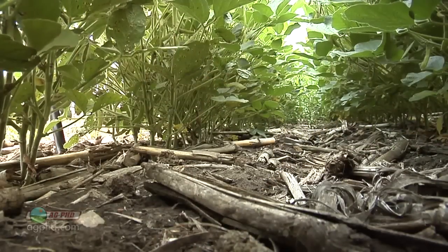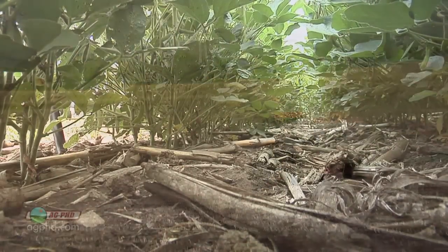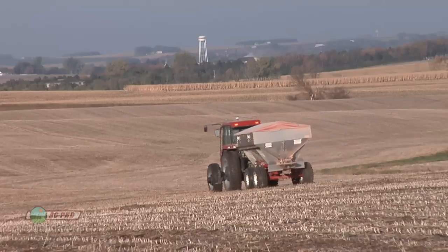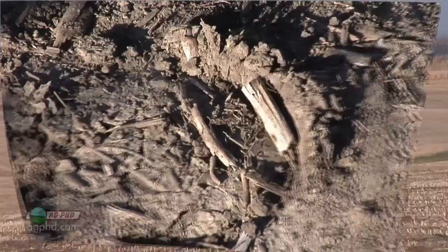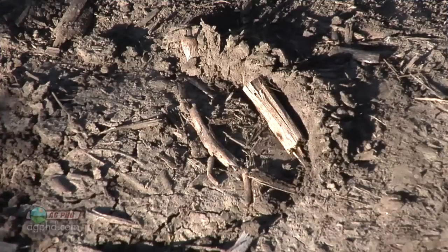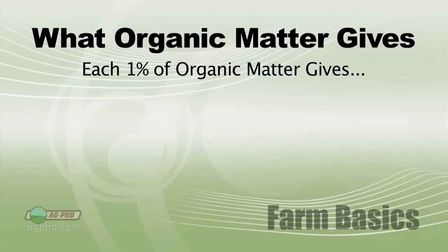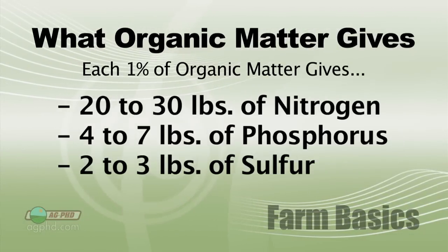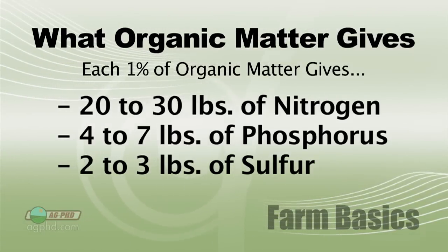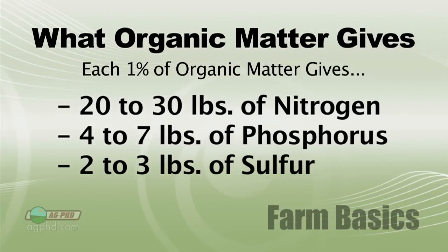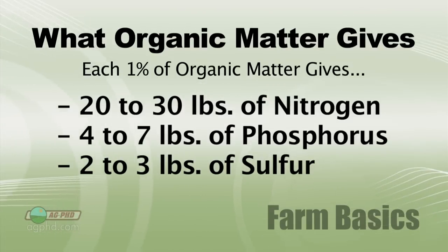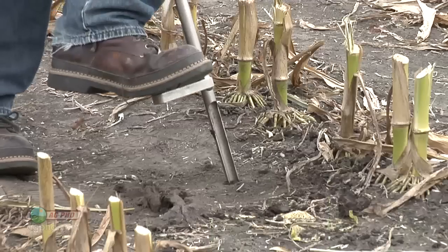The reason we're talking about this is that farmers are always looking at fertilizing their crop. But if they have a lot of organic matter in the soil, they don't need to put on as much fertilizer. For each 1% of organic matter, you'll get a range of 20 to 30 pounds of free nitrogen per year, 4 to 7 pounds of phosphorus, and 2 to 3 pounds of sulfur.